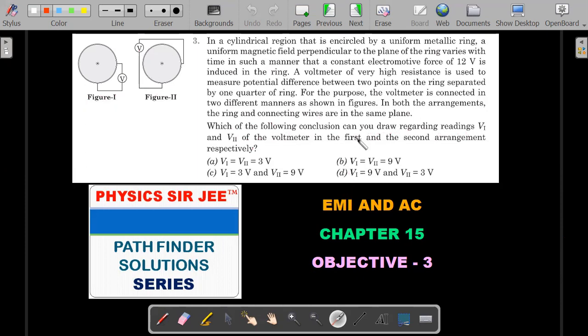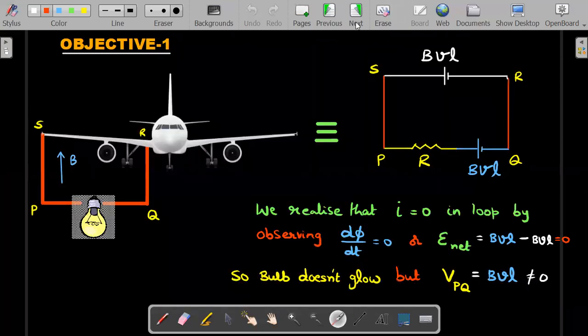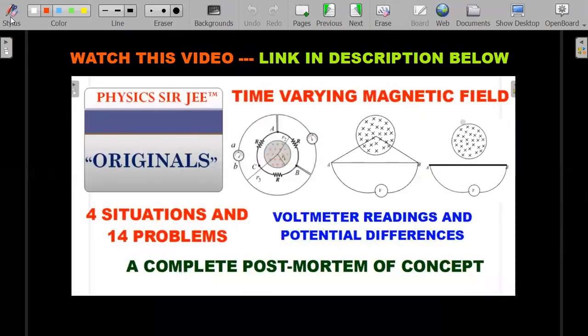Try it out and then come back for the solution. For those who are new to this channel, you should watch the second video that I have made about the time varying magnetic field. It was a complete postmortem of the concept by giving you four different situations and 14 problems. All the discussions regarding the time varying magnetic field and how voltmeters read was done in this particular second video, whose description link is in the description below. Please make sure you watch that, and that would ease out the solution that I am going to present.